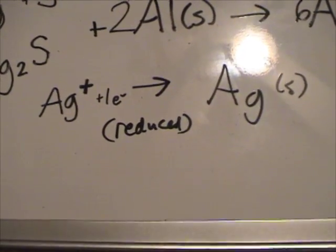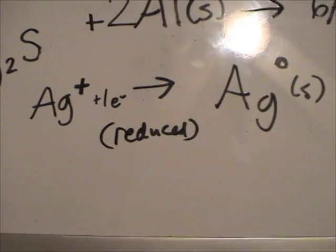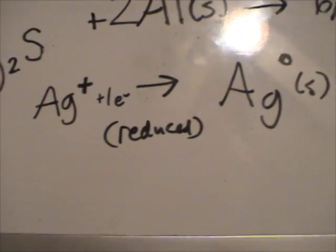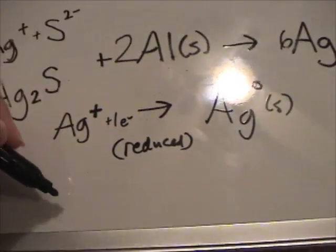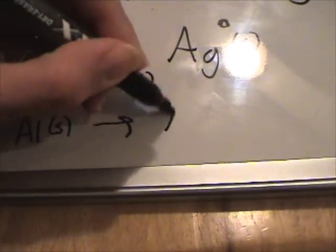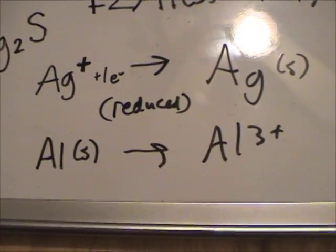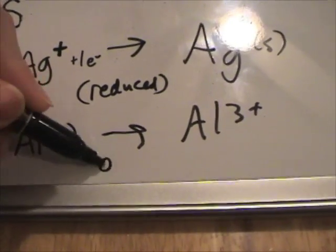So, the silver ions are reduced to the silver solid when we are polishing our silver using this electrochemical method. The aluminum foil goes from aluminum solid to aluminum cations, so they are oxidized.